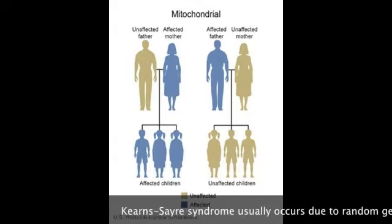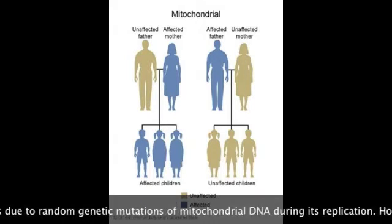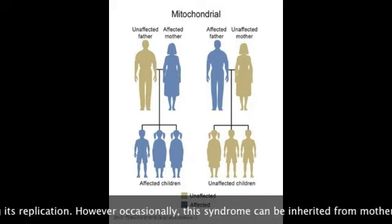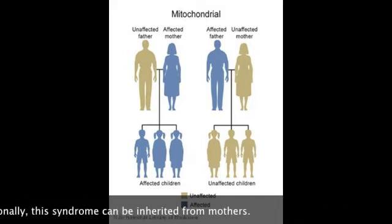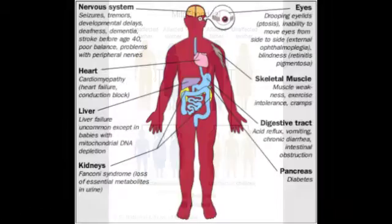Kearns-Sayre syndrome usually occurs due to random genetic mutations of mitochondrial DNA during its replication; however, occasionally this syndrome can be inherited from others.